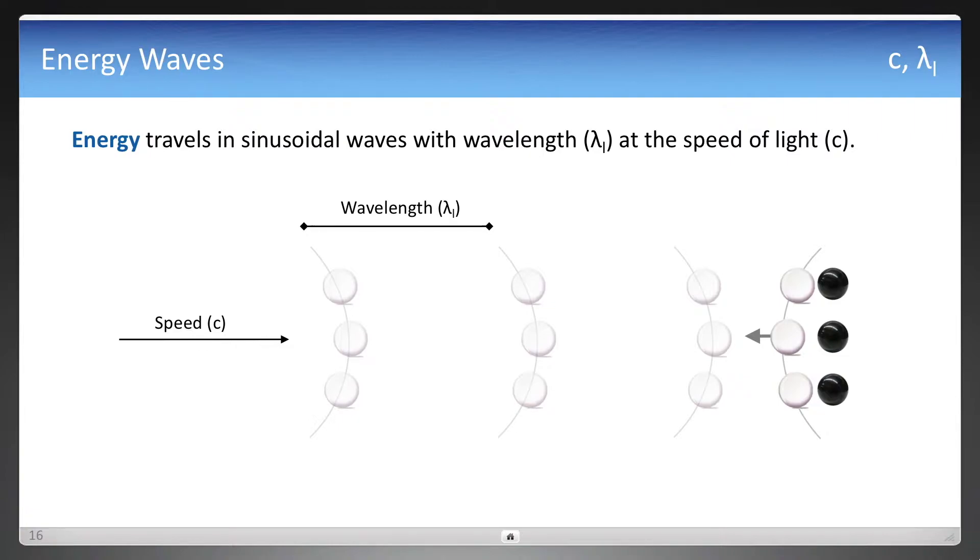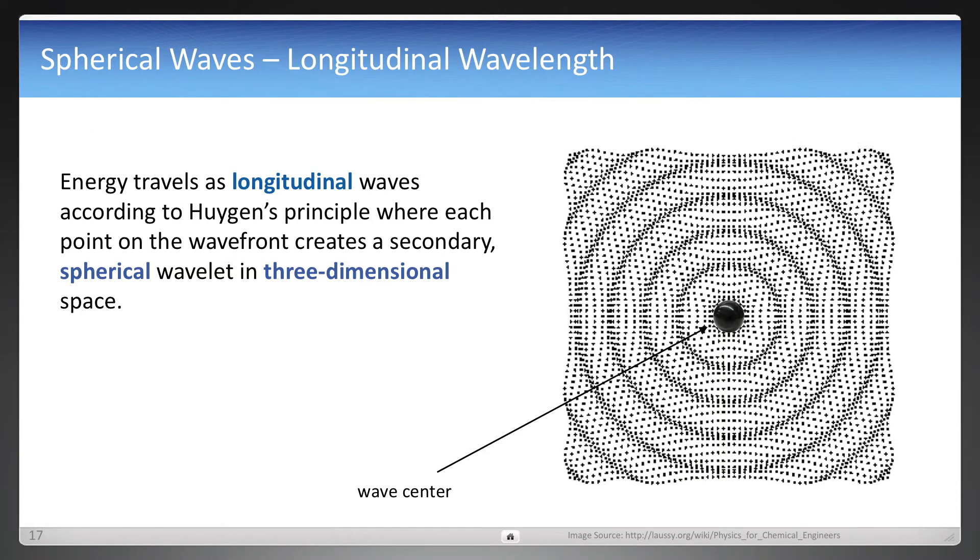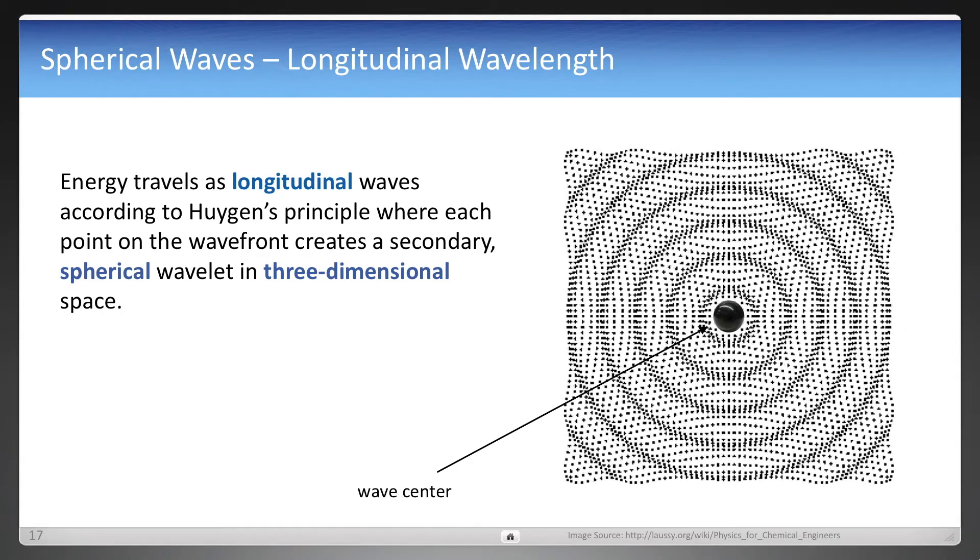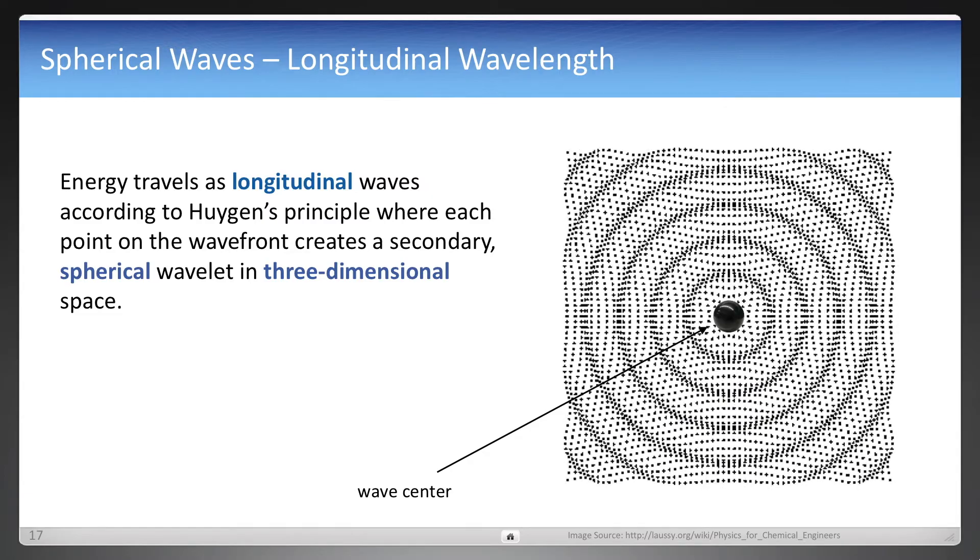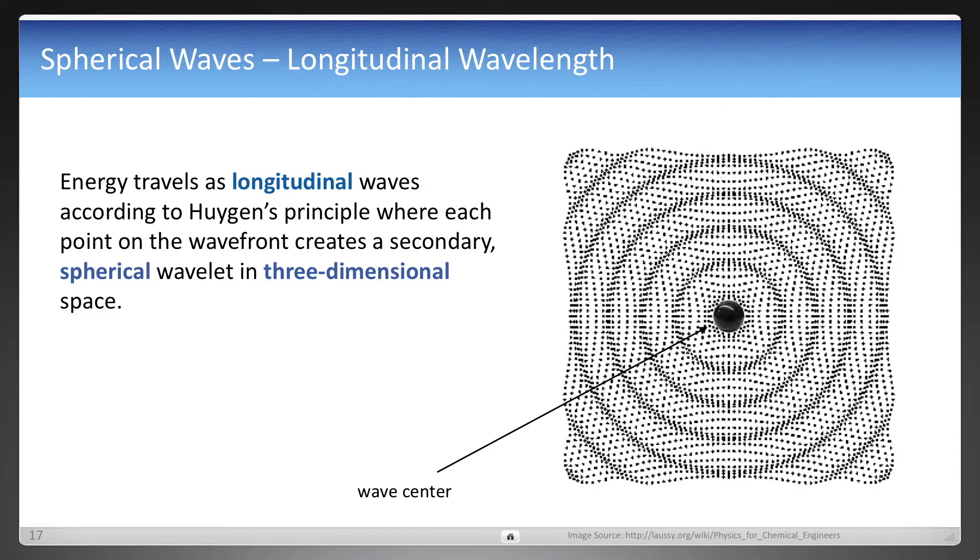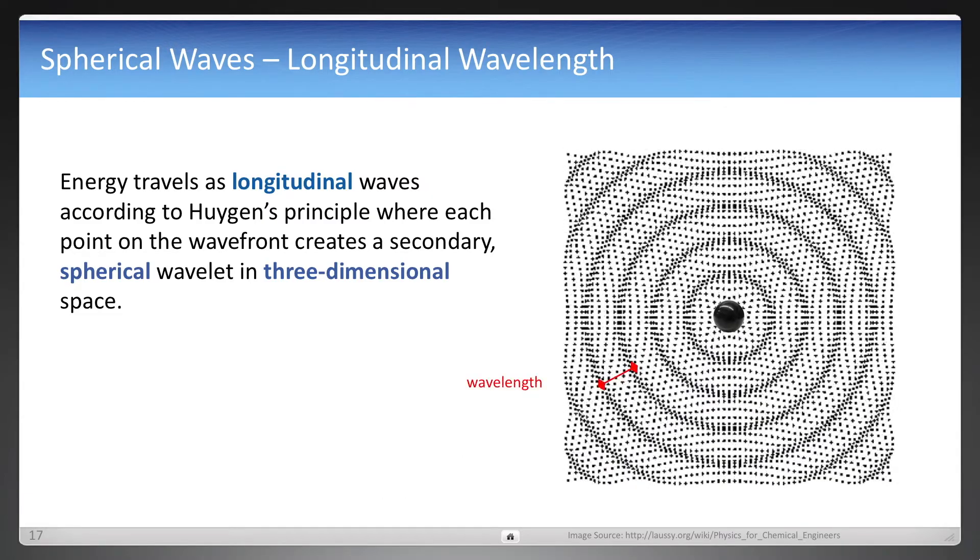So speed and wavelength. And it looks something a little bit more like this, as each and every one of those travels. You can see it bouncing or going in and bouncing out. And that right there is a wavelength in the dark bands. That's a longitudinal wavelength, a little bit different than transverse waves, which we'll get to in a second.